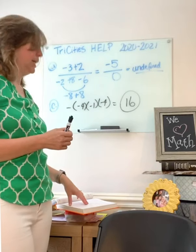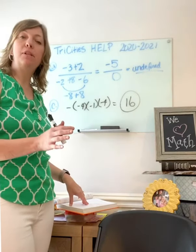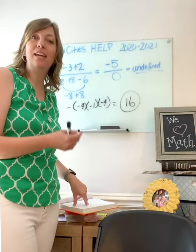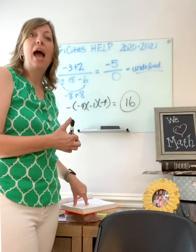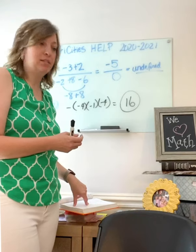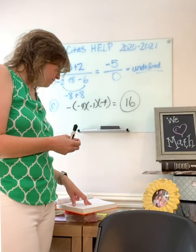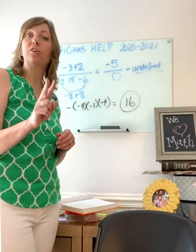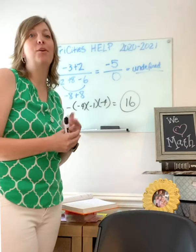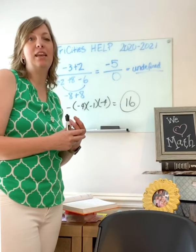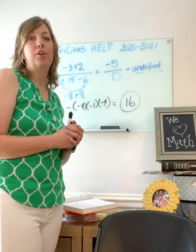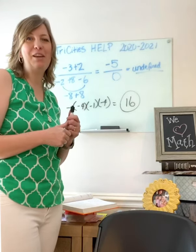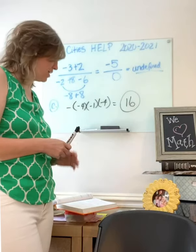Letter D is similar — you're just multiplying the numbers and then counting how many positives and negatives. On letter D there are two negatives, so it's an even number and your final answer will be positive. That's a hint for you on letter D.